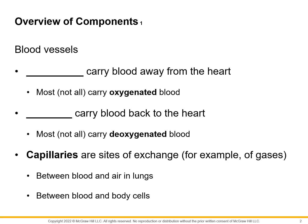Blood vessels are illustrated in red or blue in textbooks. The red ones are typically arteries — blood vessels that carry blood away from the heart, moving blood from the heart outwards. Most arteries carry oxygenated blood, meaning the hemoglobin is saturated with oxygen. The veins, typically illustrated in blue, are blood vessels that carry deoxygenated or carbon dioxide-containing blood back to the heart. Most veins carry deoxygenated blood.